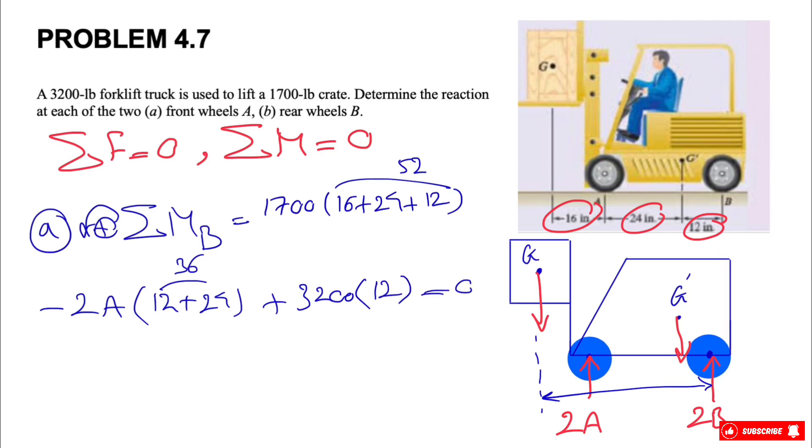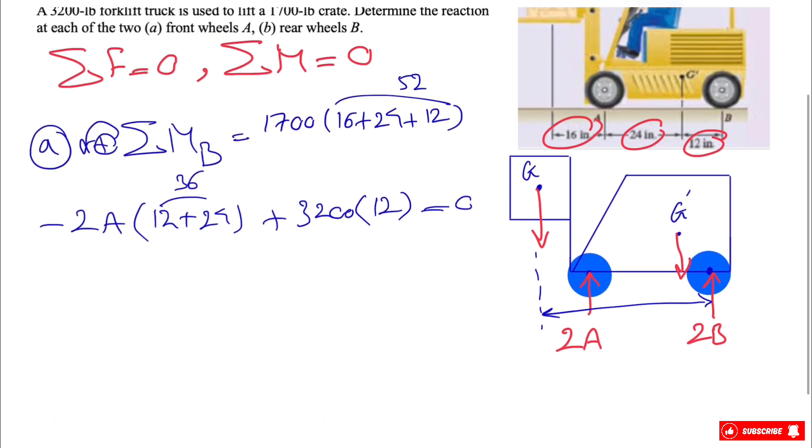And we know the weight is 3200 pounds, and the distance will be 12, equals 0. There is only one unknown in this, and that would be our A. And from here we can find A, which will be 1761.11 pounds, and this will be the direction.